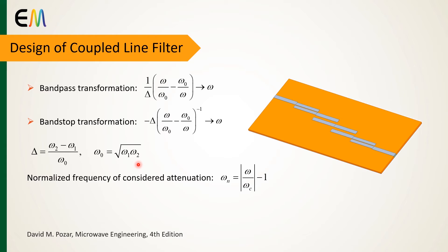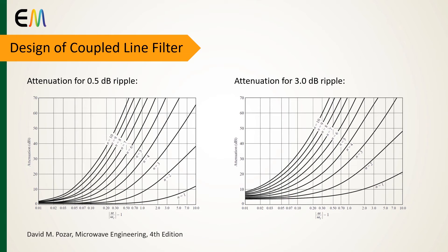Omega 1 and omega 2 denote the edges of the passband. One important parameter to determine the filter order is the normalized frequency of the considered attenuation, which is given by this equation.